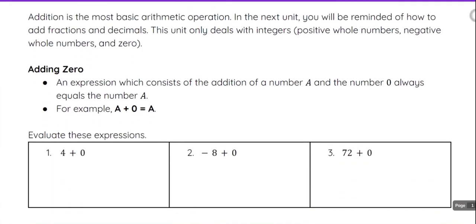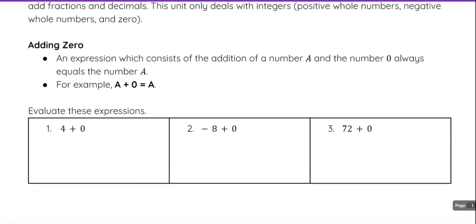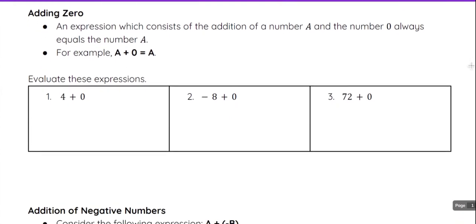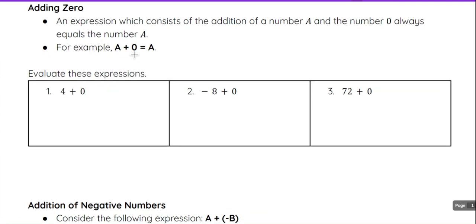So to start, we are going to look at adding zero. An expression which consists of the addition of a number a, which represents any number that we're working with, and the number zero always equals the number a. For example, a plus zero equals a. So this is just saying that any number we start with, when we add zero, we end up with the same number we began with.